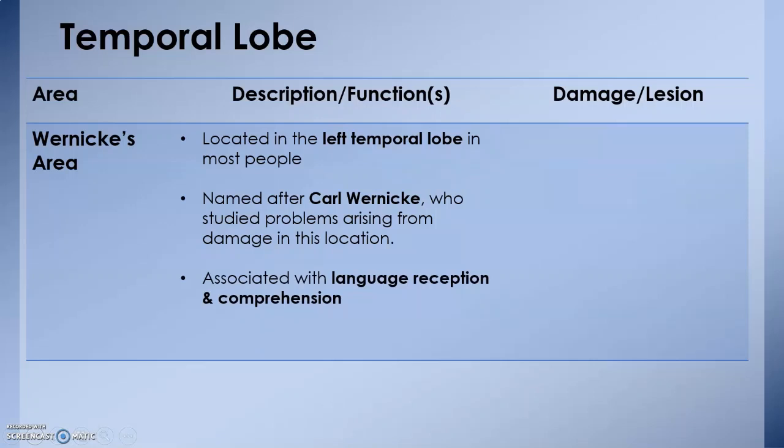Wernicke's area is associated with language reception and comprehension. If you remember, Broca's area in the frontal lobe was associated with language production. Now the Wernicke's area lies in the temporal lobe and is associated with language reception and comprehension. It is this area that helps us understand spoken language.